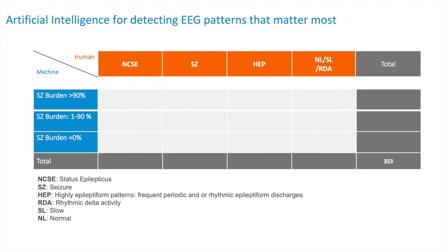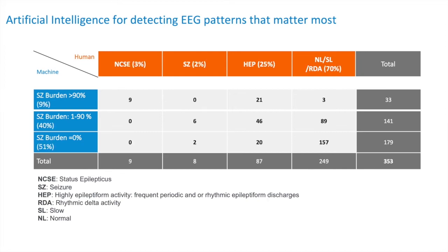I'm personally excited about this number — 157. Imagine you are in a hospital and you have to respond to 353 pages during after-hours or weekends because an EEG was done and needs to be read. Without AI, all 353 times you have to wake up and read the EEG. But with AI, if all 353 EEGs were done after midnight, 179 of them you won't get a page. Of those 179, only two had seizures but none had prolonged seizures, and 20 were highly epileptiform patterns — but for the most part they were all normal or diffusely slow.